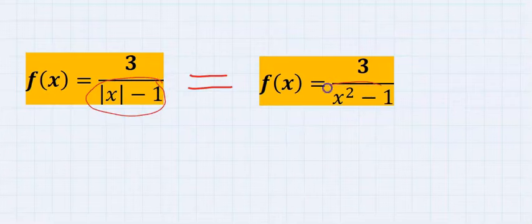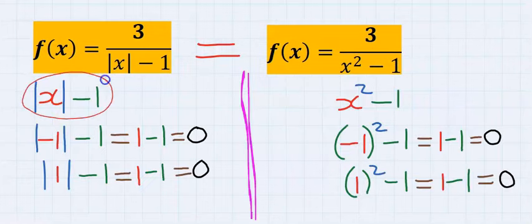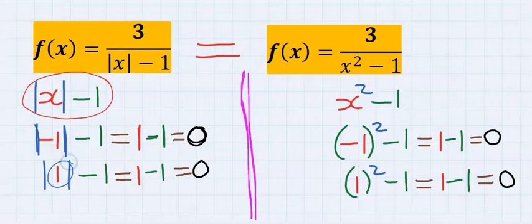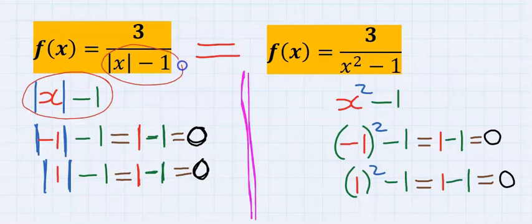Consider the denominator only — zero at the denominator will stop this function from existing. At the denominator, whenever x is equal to minus one, this absolute value will reject the negative and return one, and one minus one will return zero. Hence, at x equal to minus one, we get zero at the denominator. To get zero also, whenever x is equal to one, the absolute value will return one and one minus one will return zero.